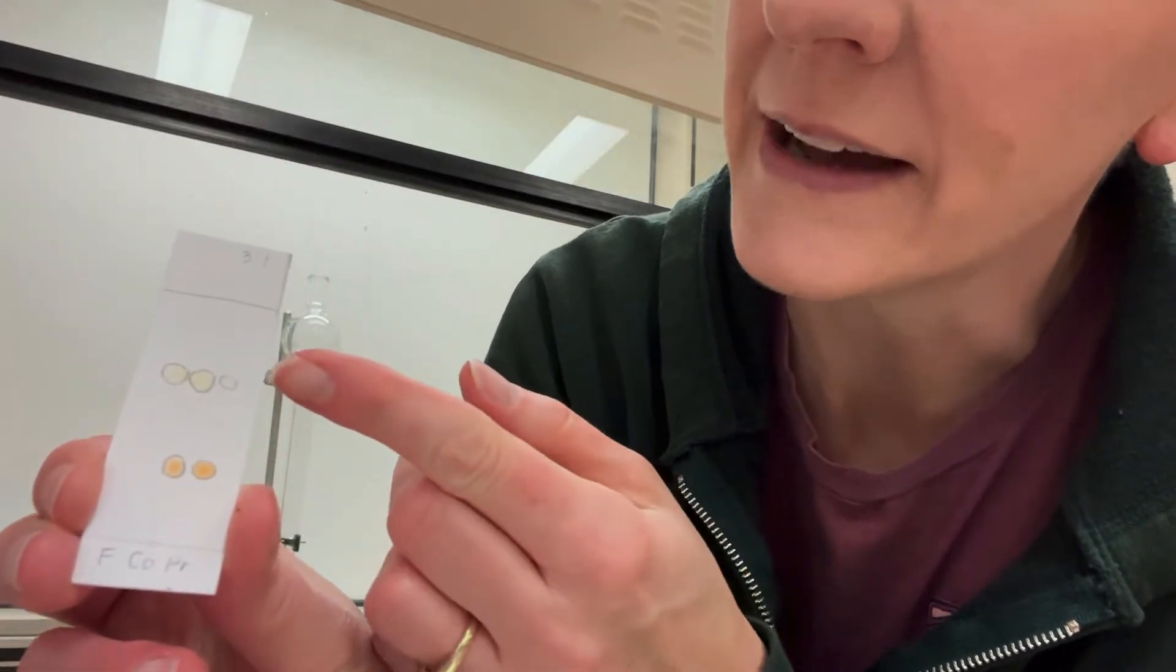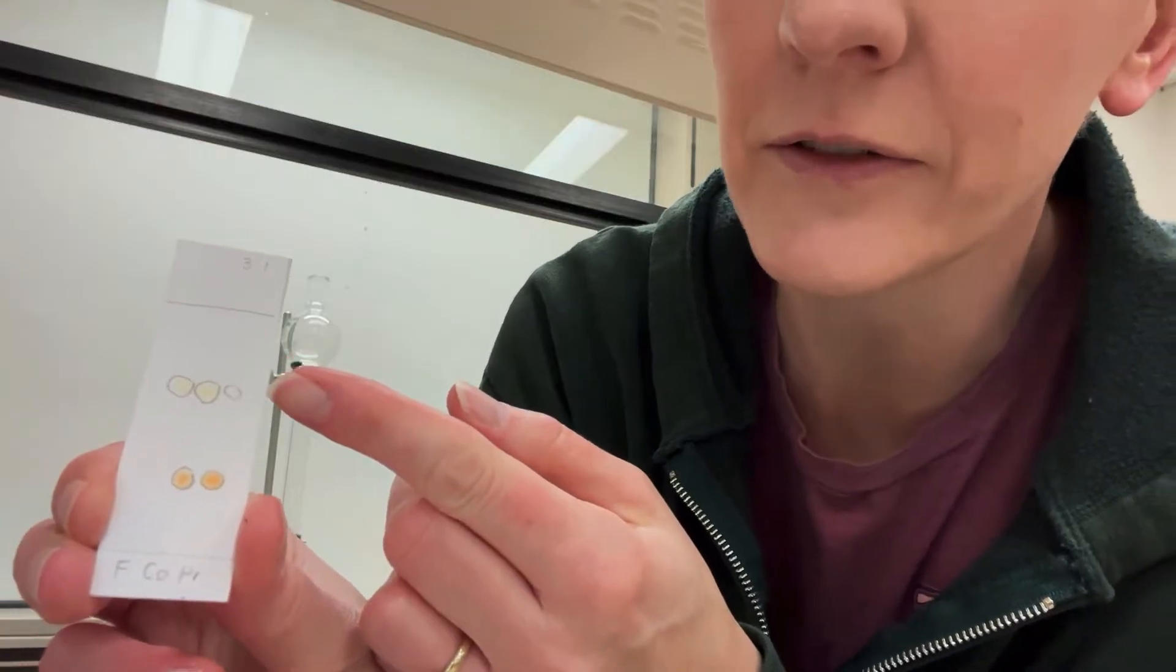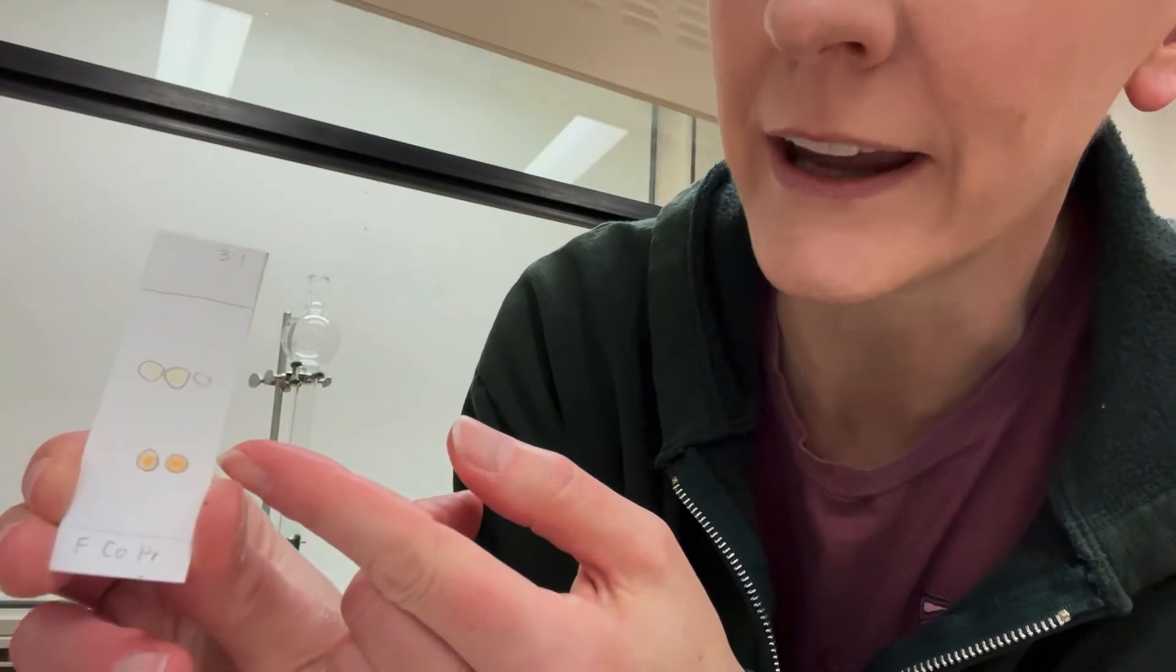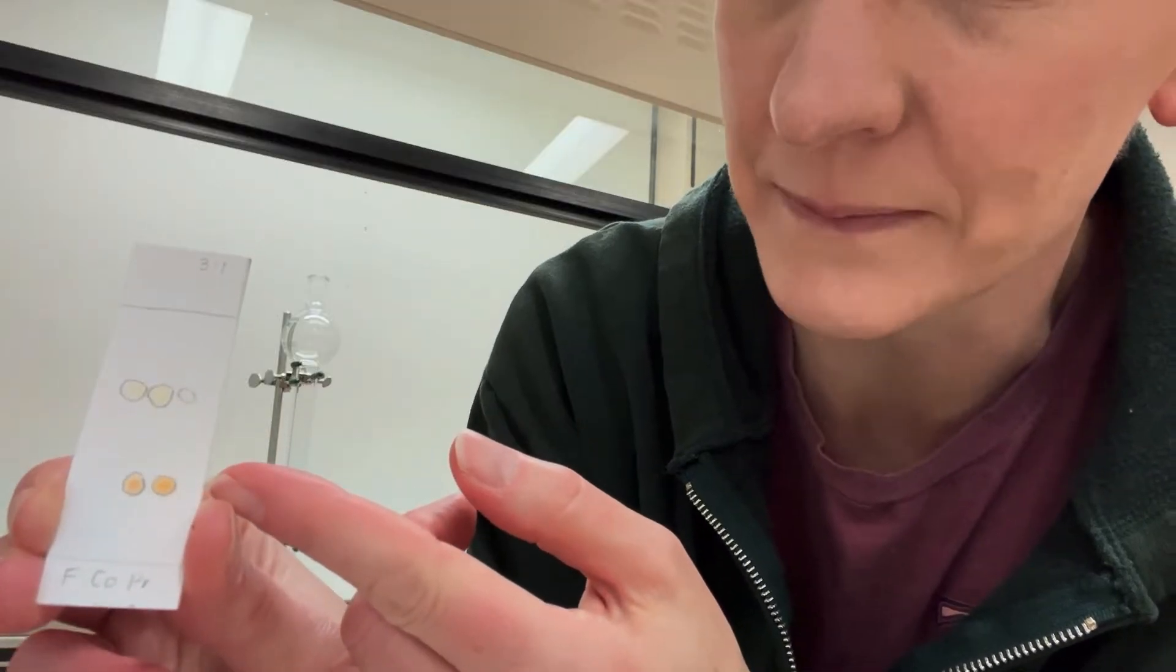So the TLC looks like this. In this lane I spotted ferrocene and that's that yellow compound up here. The middle lane is a co-spot and the other lane over here is the product mixture. If you notice, I have a small amount of ferrocene that's left over. That's what I'm going to be trying to get rid of and this spot is what I care about. That's the acetyl ferrocene.